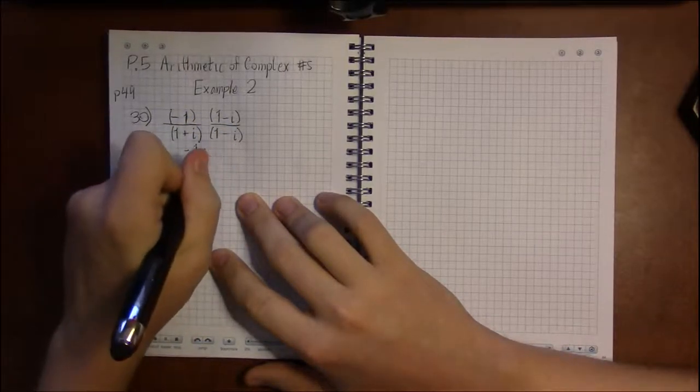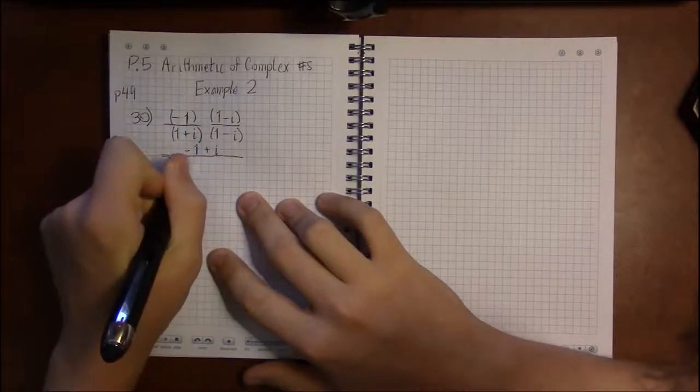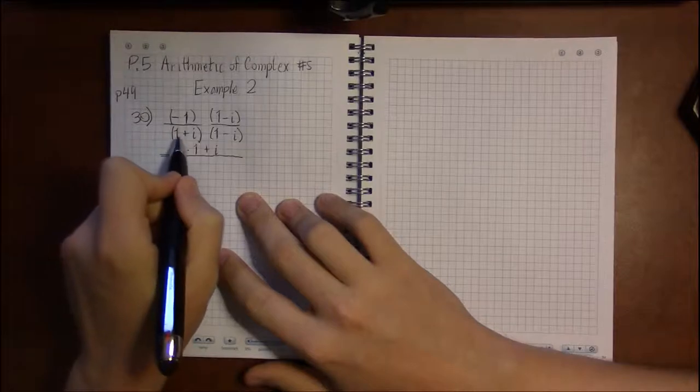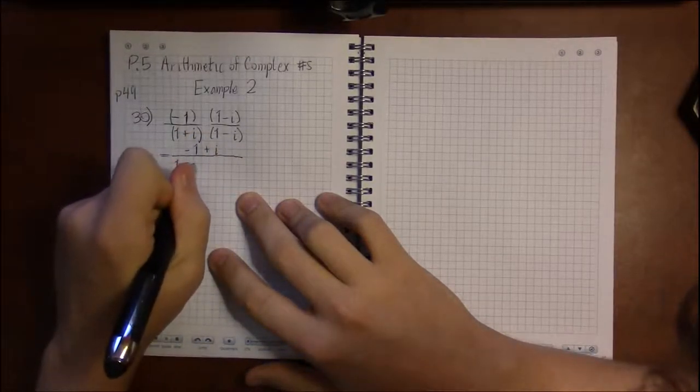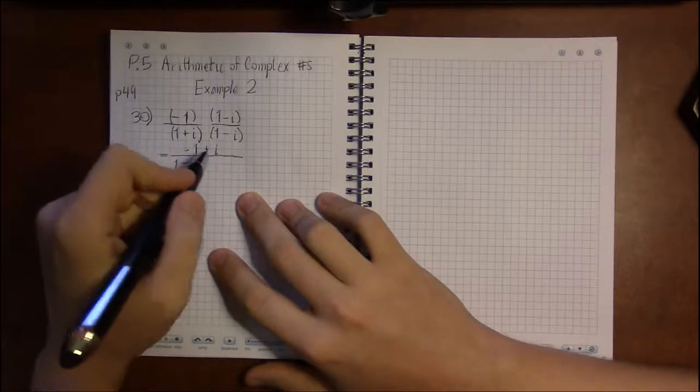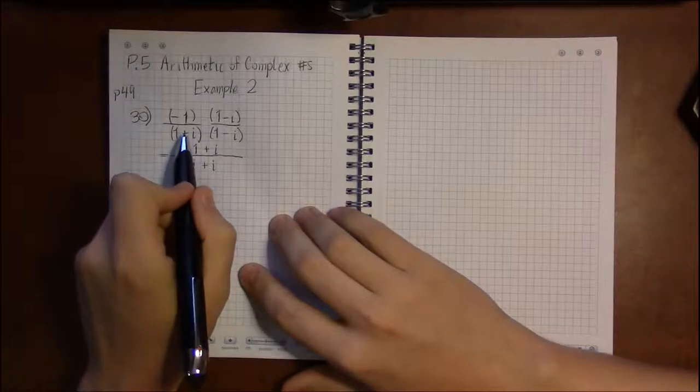And then the denominator is the complicated one. 1 times 1 is 1. 1 times minus i is minus i. i times 1 is i, so we write down plus i.